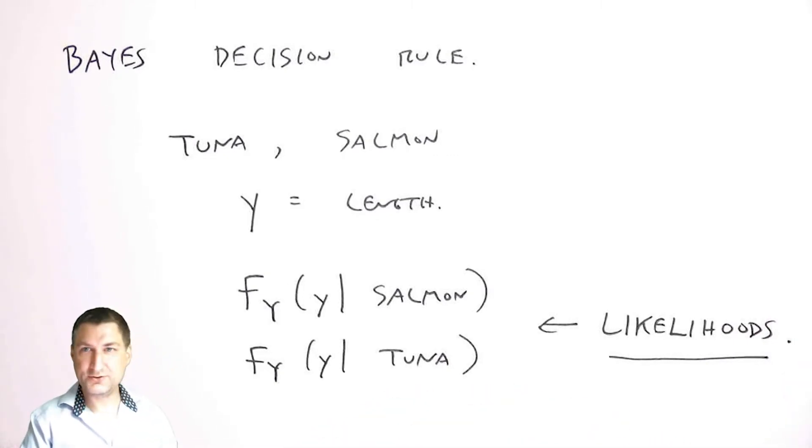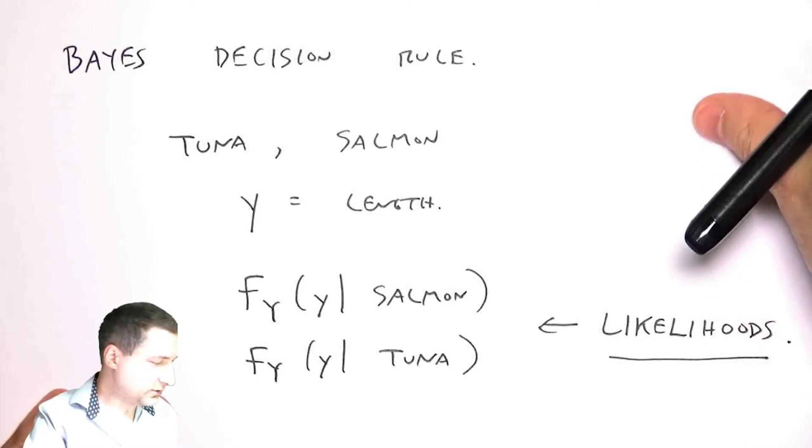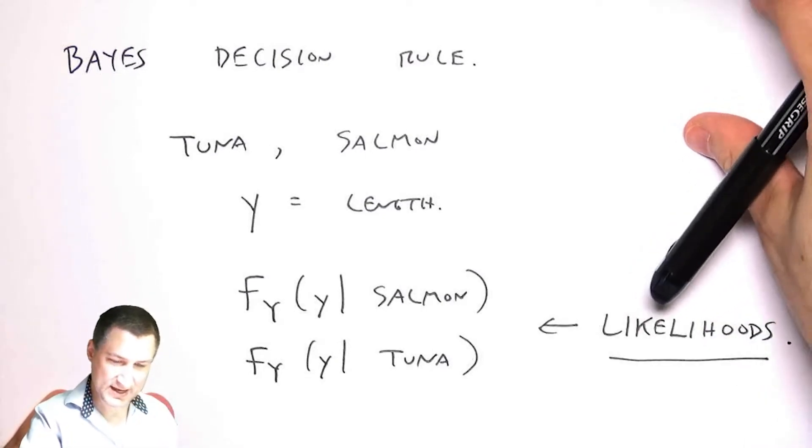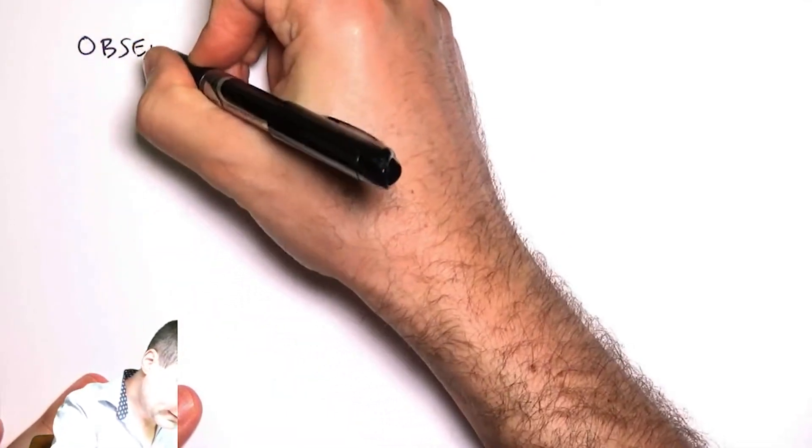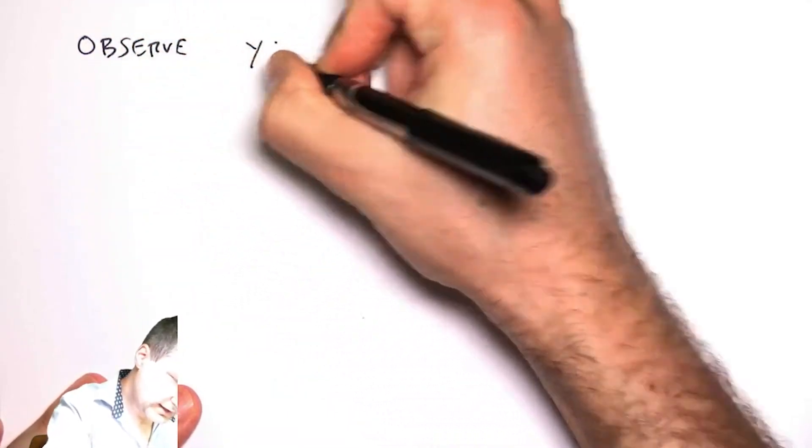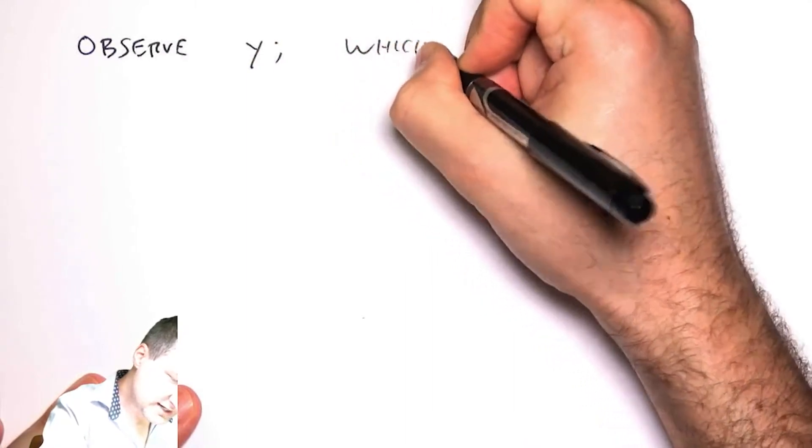So what I want to do now is flip it around and say, okay, well now I see y, tell me what is the most likely class. So now I observe y, and I want to know which type of fish it is.